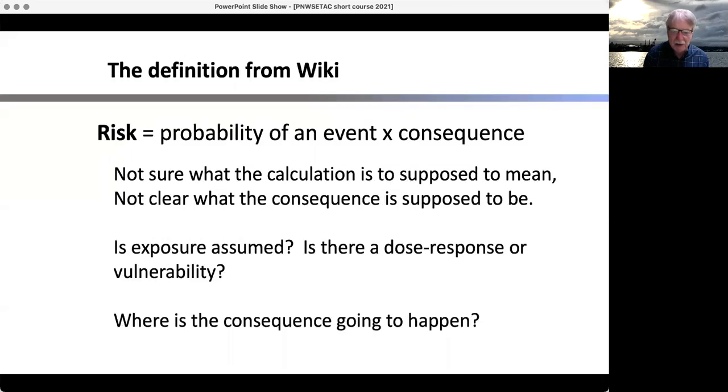We're going to define risk for this course. This is what I see from wiki a lot: probability of event times the consequence. I don't really know what this calculation is supposed to mean. I'm not really clear what consequence is supposed to be. Is there an exposure that's assumed? Is there a dose response? And where is the consequence going to happen? We're doing ecological risk assessment. That's a very important aspect.